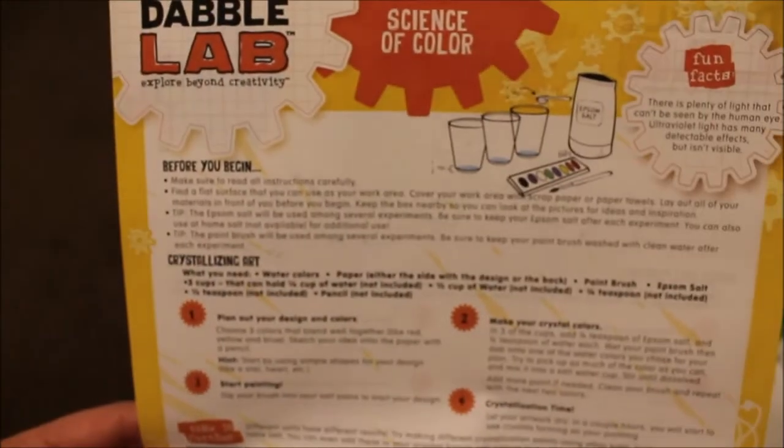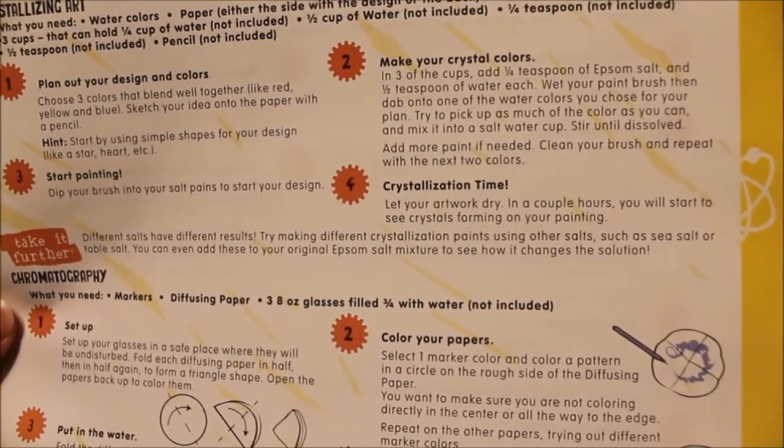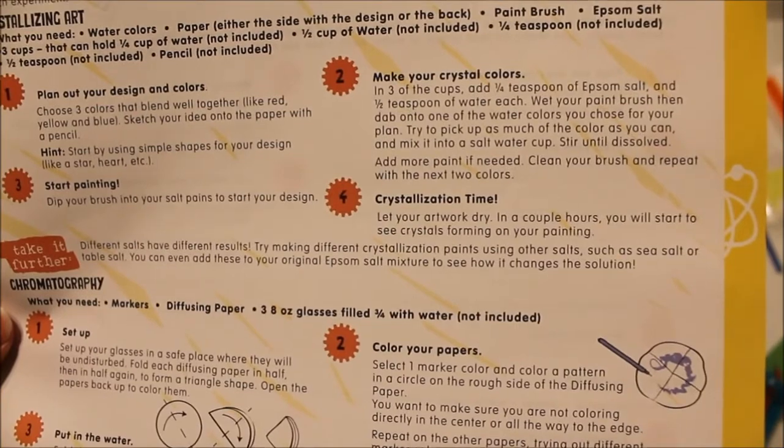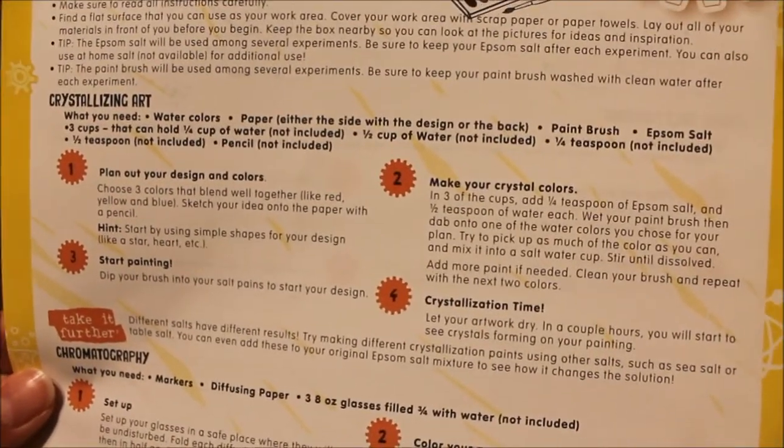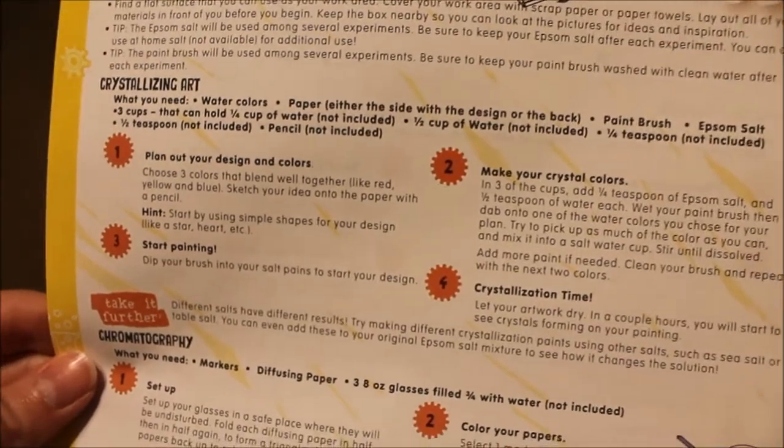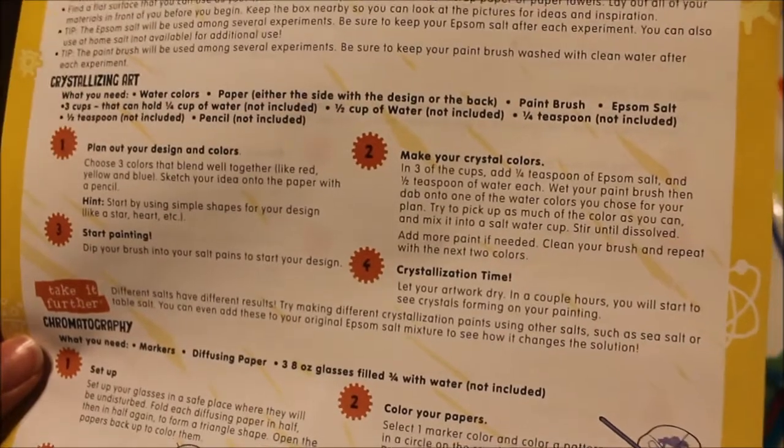I don't have cups so I'm having to use these little containers. I'm a little bit confused because it says three cups that can hold one-fourth cup of water not included, but then in step two it says in three of the cups add one-fourth teaspoon of salt and one-half teaspoon of water each. So why does it need to hold one-fourth cup of water when we're pouring in one-half teaspoon of water each?